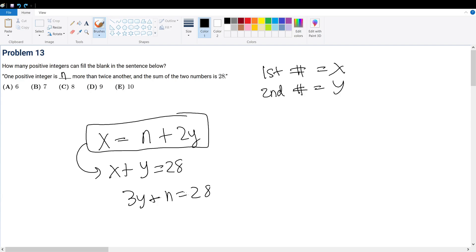Well obviously, we know that x is n + 2y, so x is obviously larger. So that must mean that n cannot—3y + n cannot exceed 28, because if that's the case, then x will no longer satisfy the given scenario.